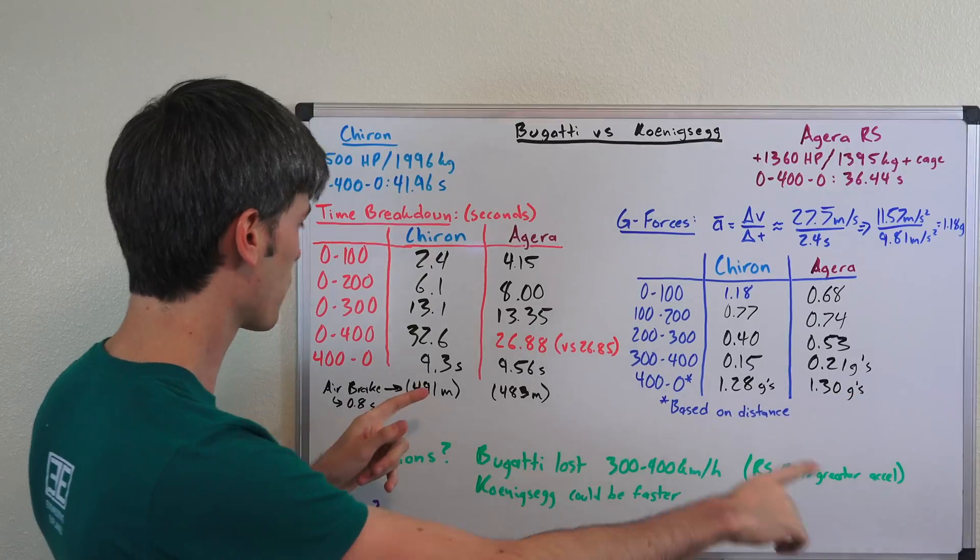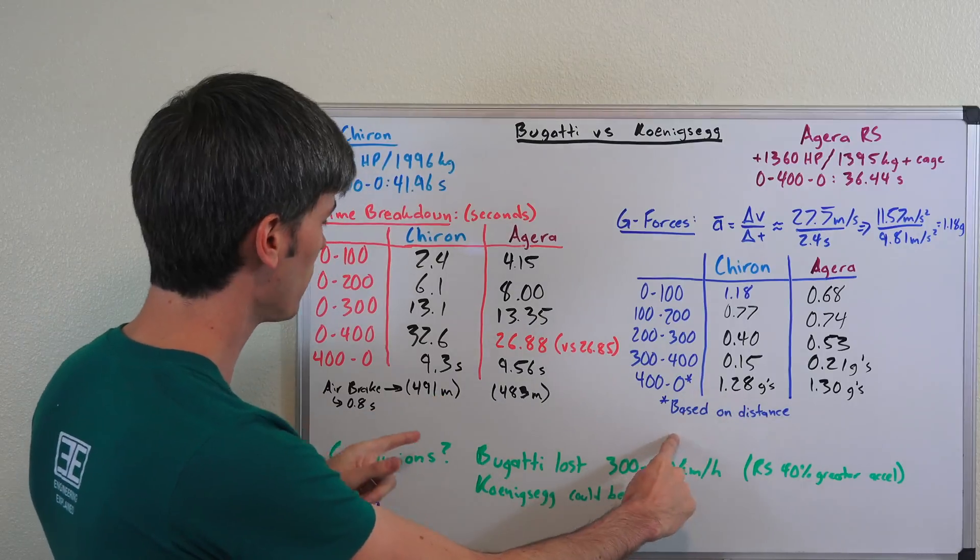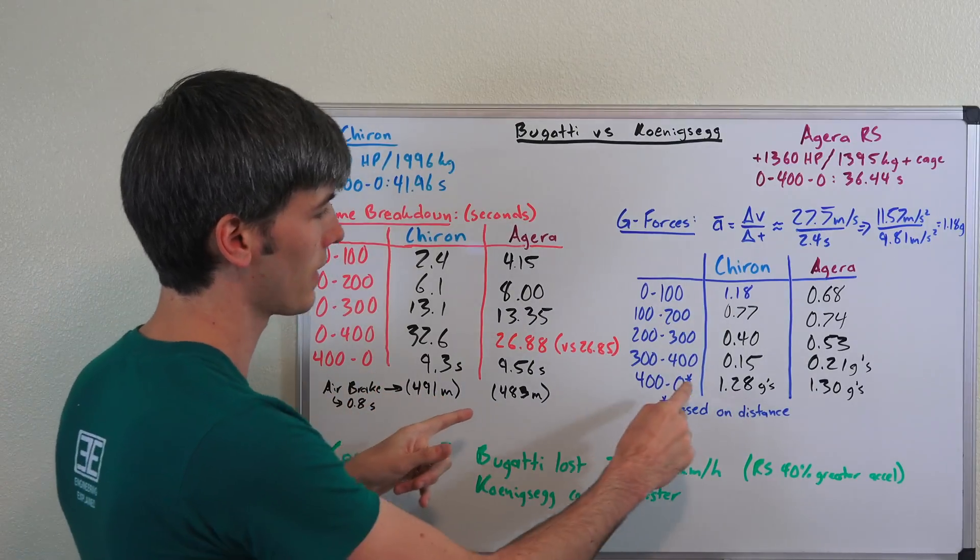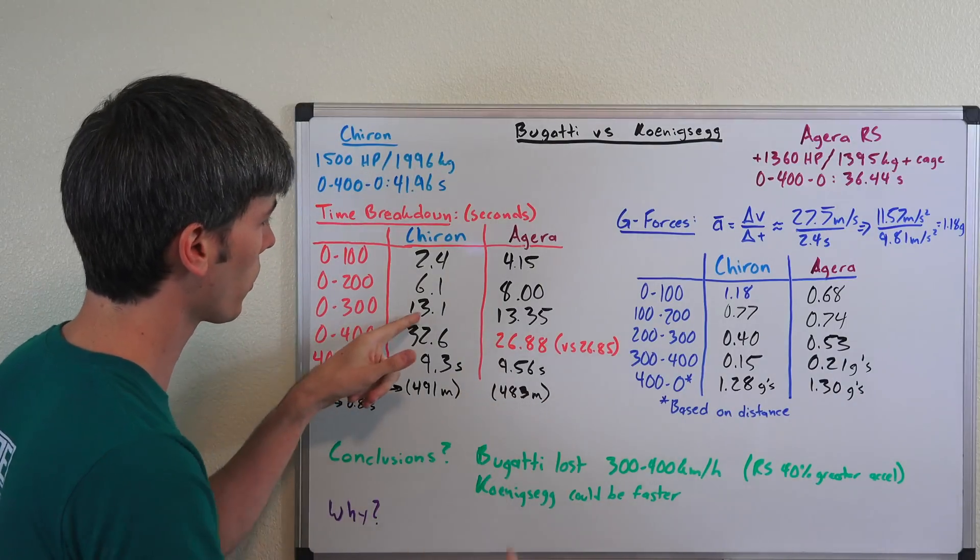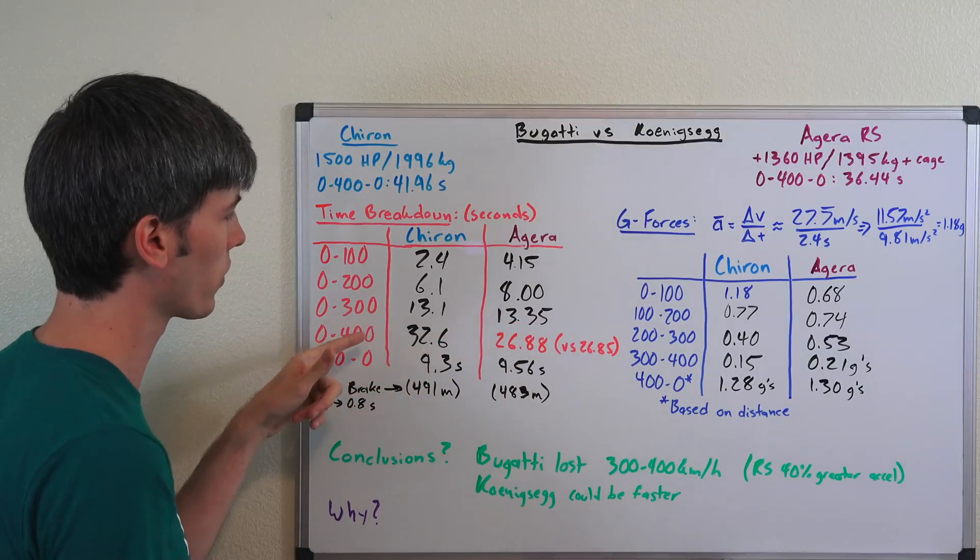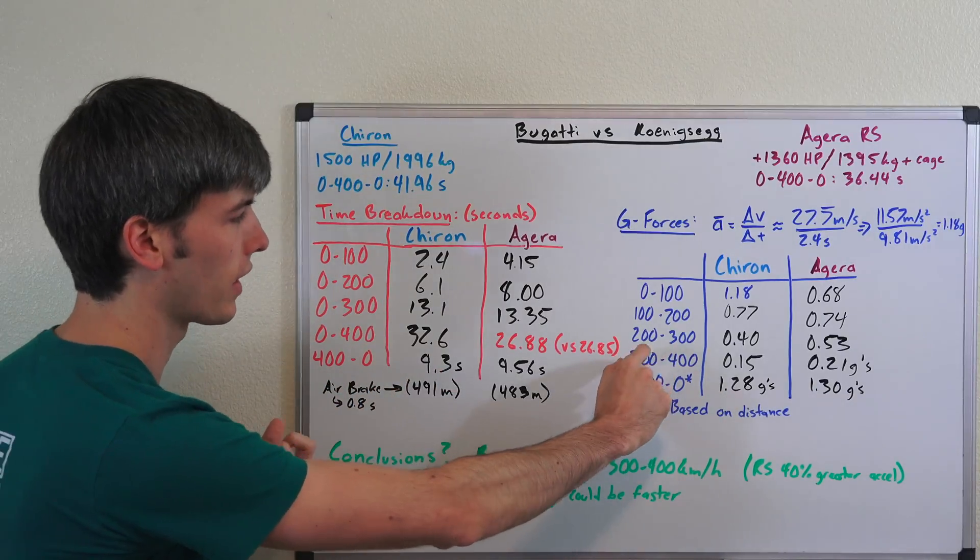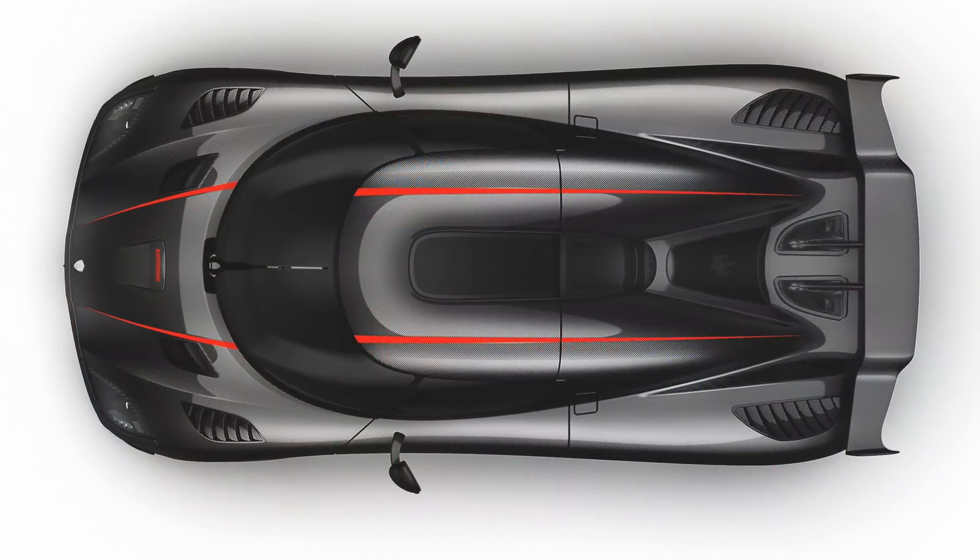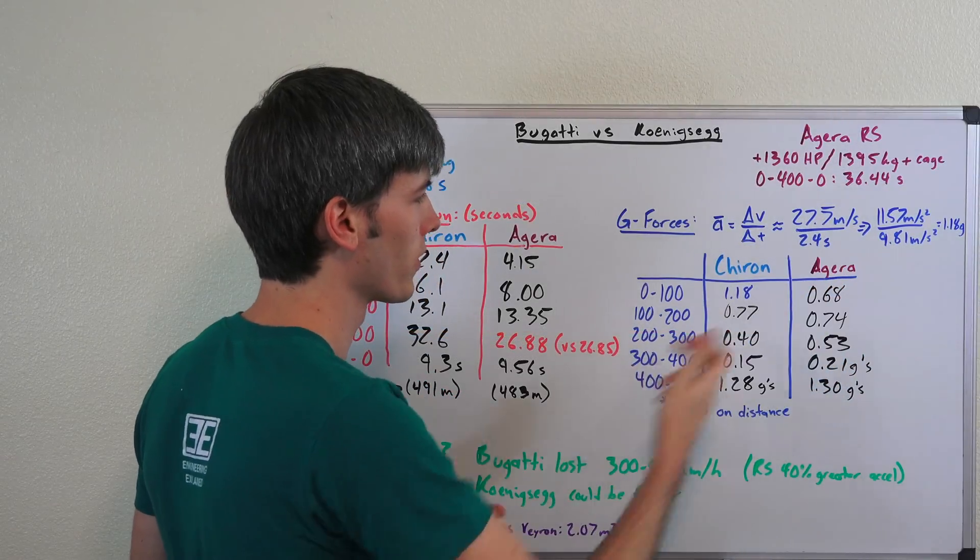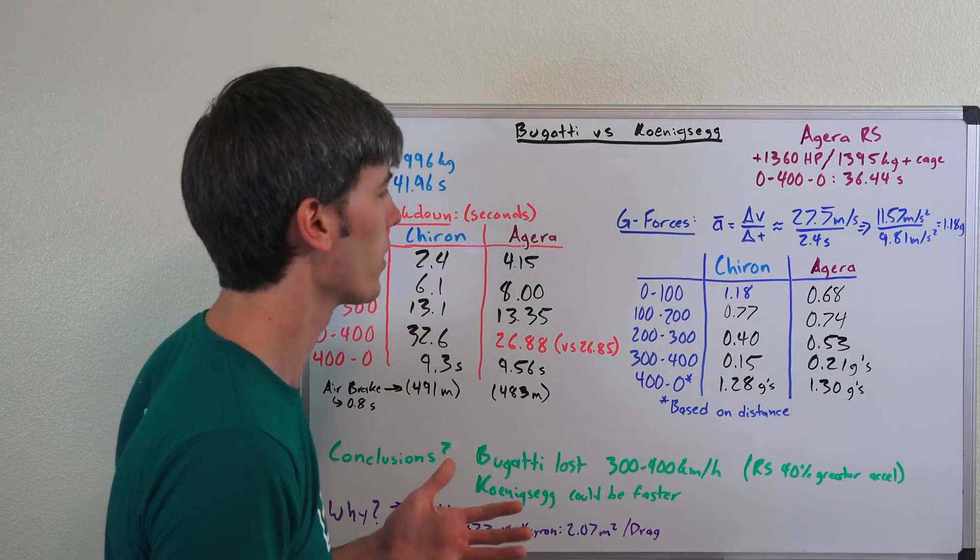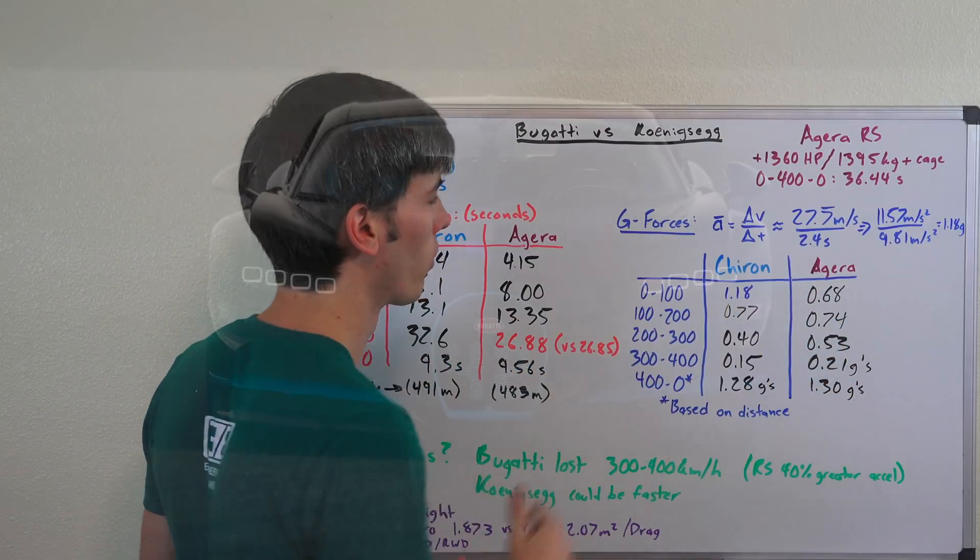Then here we have the measurement, which I didn't discuss previously, but basically the g-forces for braking super even, 1.2 g's versus 1.3 g's. So pretty much even 0 to 300, 13.1, 13.35, you can see very close there up to 300 kilometers per hour, very close in the braking. All of this race was won and lost in that 300 to 400 kilometer per hour segment. Also, I think it's worth mentioning that the Koenigsegg could be faster if they had better traction conditions. Obviously they were having some wheel slip occur from 0 to 100, they had wheel slip as high as 180 kilometers per hour, so if they could improve those low times they could take some time off of this overall time.